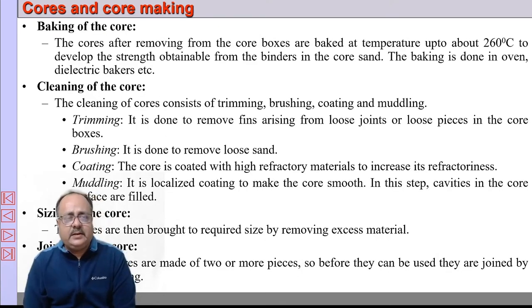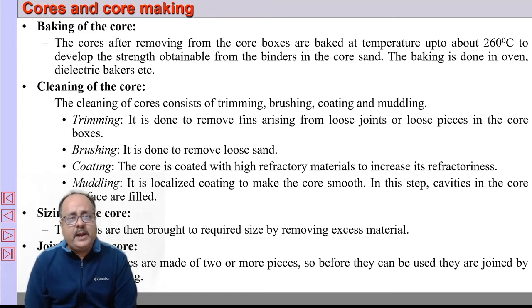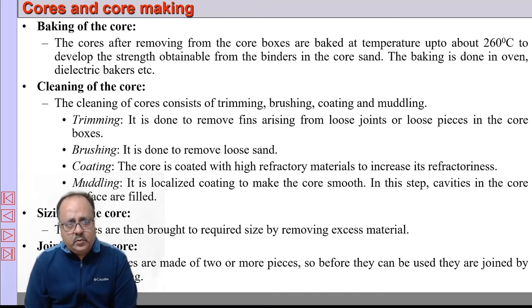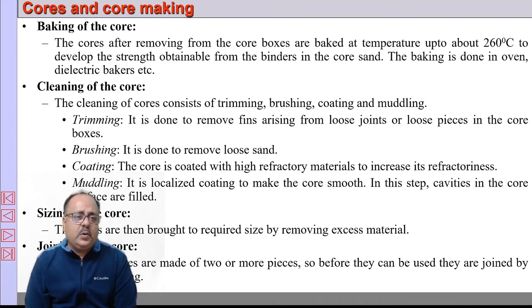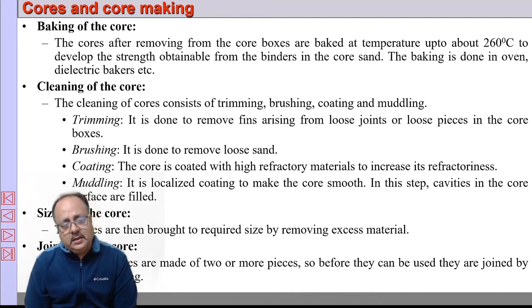Then the core is baked, typically to around 200 to 300 degrees centigrade, so that the binder develops its strength. After baking, it is taken out, cooled, and then cleaned. Cleaning consists of trimming — to remove fins from loose joints — brushing to remove loose ends, and coating with refractory material to increase refractoriness. Muddling refers to localized repairing or coating. The core is then brought to the required size, and if made of two parts, adhesives or wires are used to join the sections.